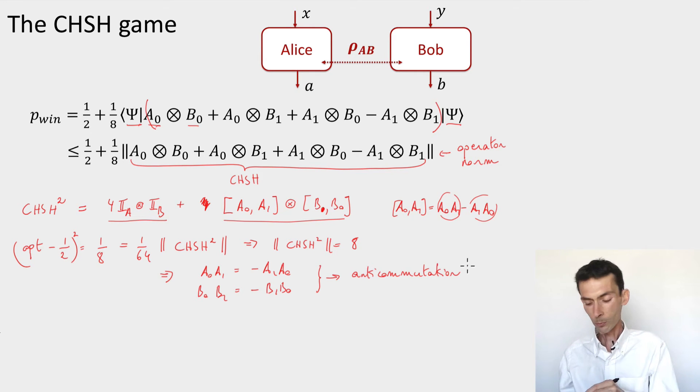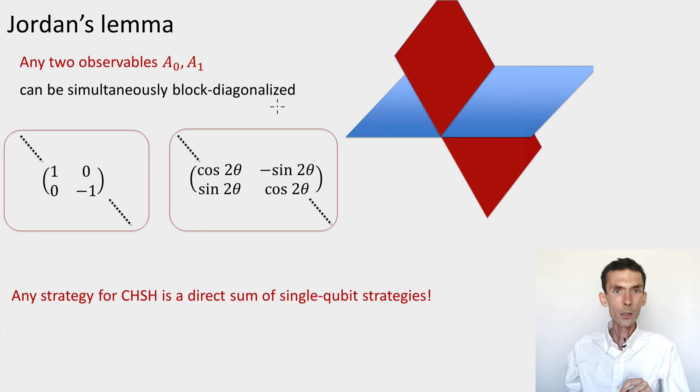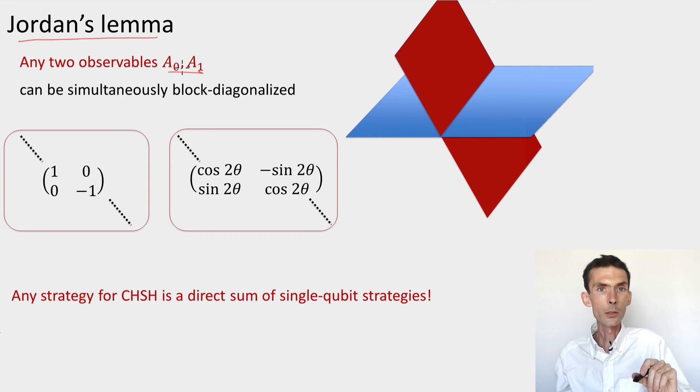Let's look at another aspect of these strategies. The second ingredient that I want to use is so-called Jordan's lemma. This is a very powerful mathematical theorem. You could think of it about projections in high-dimensional space. We can also think of it as a theorem about observables. What the theorem says is that if you take any two observables, for example, Alice's observables in the CHSH game, then you can always find a basis for the space on which these observables act such that they have a very simple form, they're simultaneously block-diagonal.